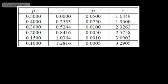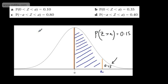Looking at 0.15 in the table — reading this off, that's going to give us 1.0364. So A = 1.0364. Nice and straightforward. All we're doing is using a bit of logic to find that.